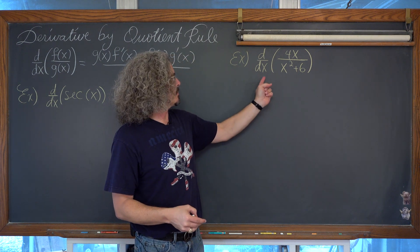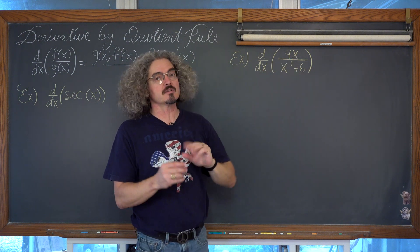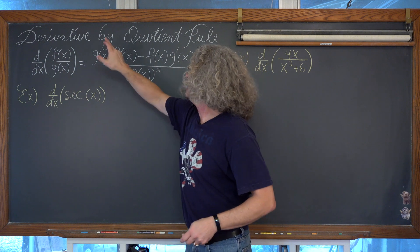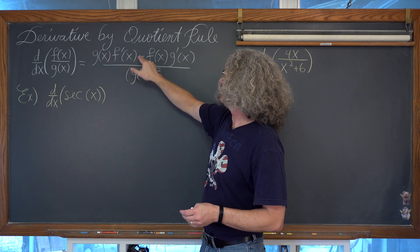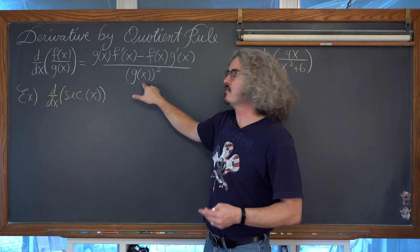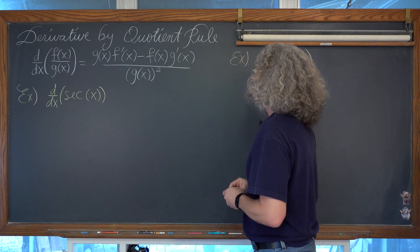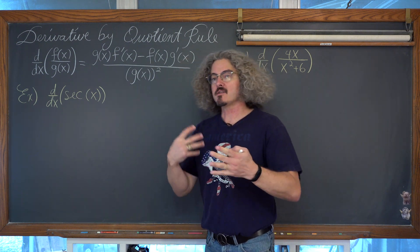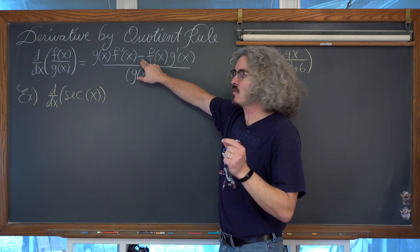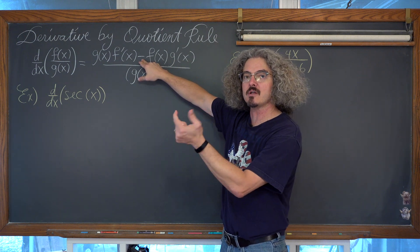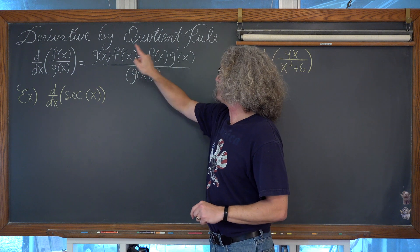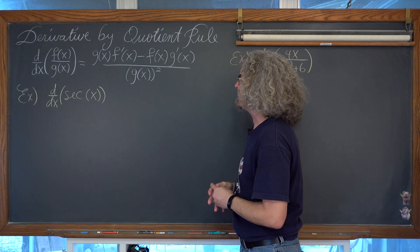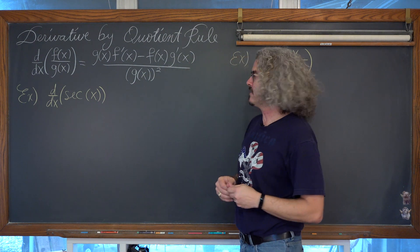So what are we to do when we go to take a derivative of basically the division of two different functions — a quotient? Well, the derivative with respect to x of f(x) over g(x) is going to be equal to g(x) times f prime of x minus f(x) times g prime of x, all over g(x) squared. Now subtraction is not commutative, so it's very important that we remember the order of the subtraction in the numerator, otherwise we can do everything else right but get the sign of our final answer incorrect.